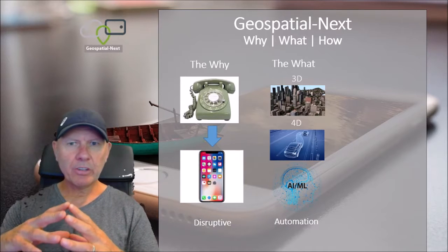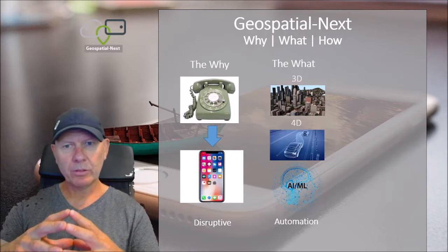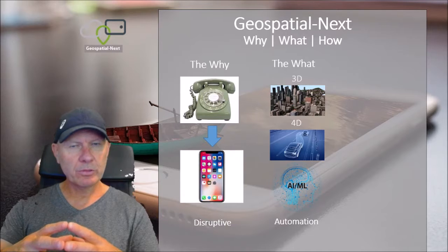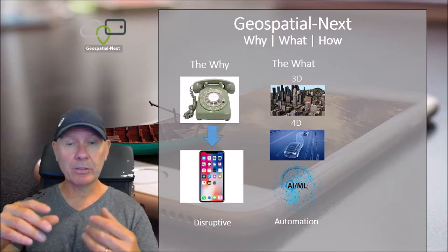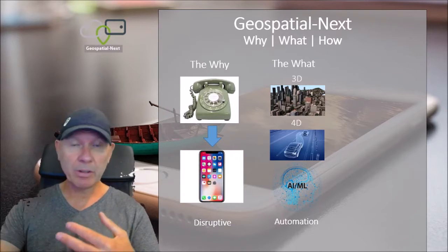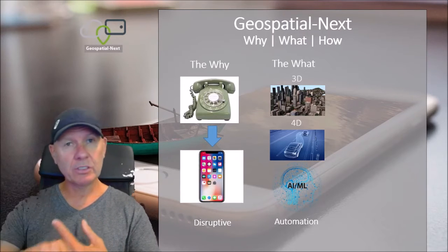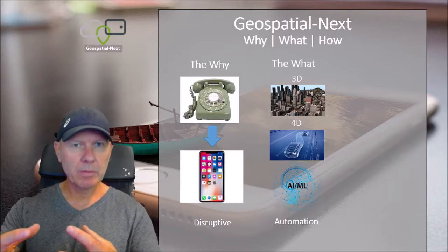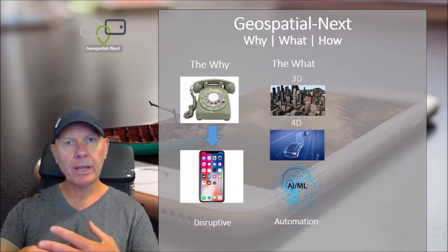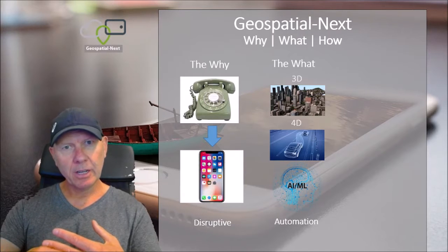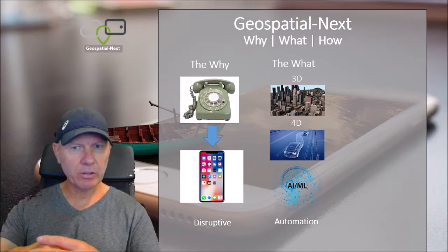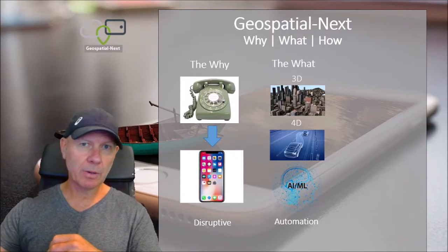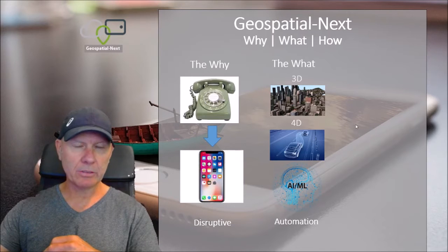So the what — I generally point at three things, though we could go a lot wider. We started to see multidimensional data appear; we're collecting it through new sensors, collecting three-dimensional and four-dimensional real-time data. We're processing data with artificial intelligence and machine learning. So we're in this phase of automation — we're no longer in a world where processes and data collection are done manually. This whole world of automation is what's driving, in large part, this Geospatial Next world.